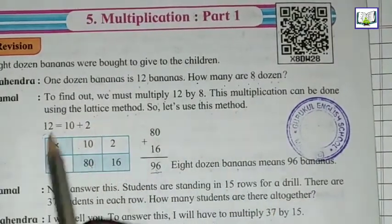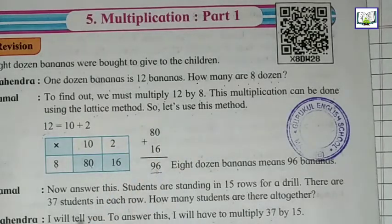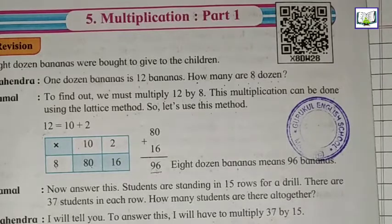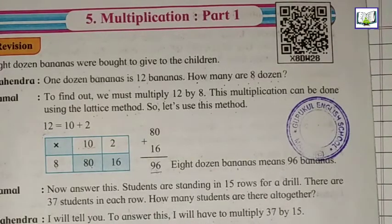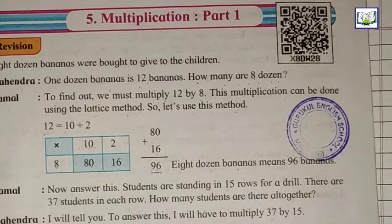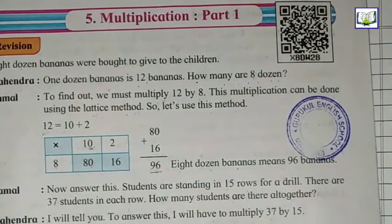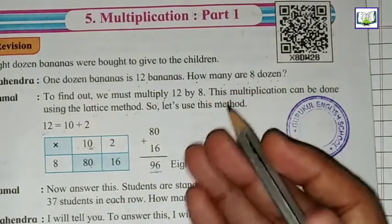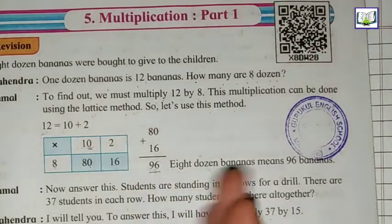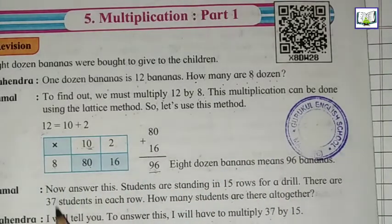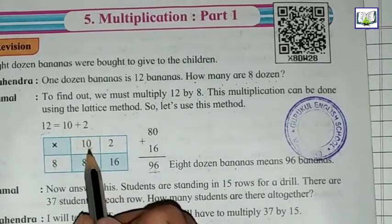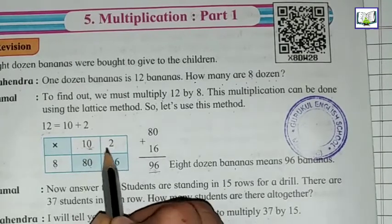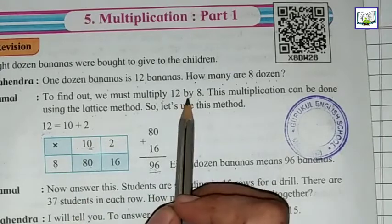This is the lattice method where we break the numbers according to their digits. If there is 32, we will separate it into 3 and 2. Tens will be on one side and units will be on the other side. So here we have 12 multiplied by 8. We separate 12 into 10 plus 2.